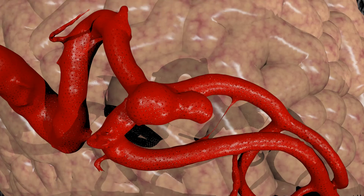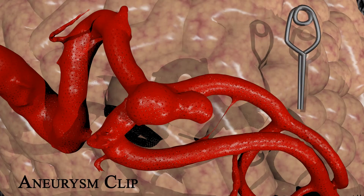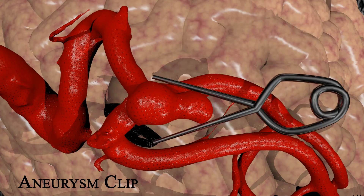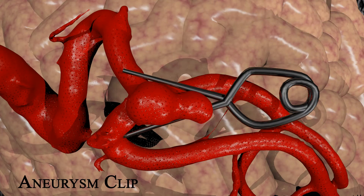After the completion of the dissection of the sylvian fissure, the intracranial aneurysm is carefully dissected away from the surrounding vasculature, where one or more specific aneurysm clips are applied to the neck of the lesion.